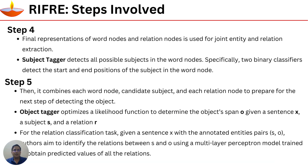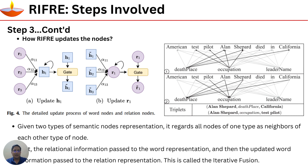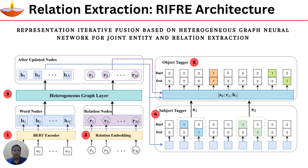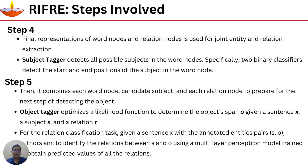Going back to the original architecture slide: step 3 is the heterogeneous graph layer. After this step we have updated word nodes h1, h2, ..., hN and updated relation nodes r1, r2, ..., rM. There is a line from h1..hN going into the subject tagger, and also connected to SRH. The relation node is then connected to SRH, which is fed to the object tagger.